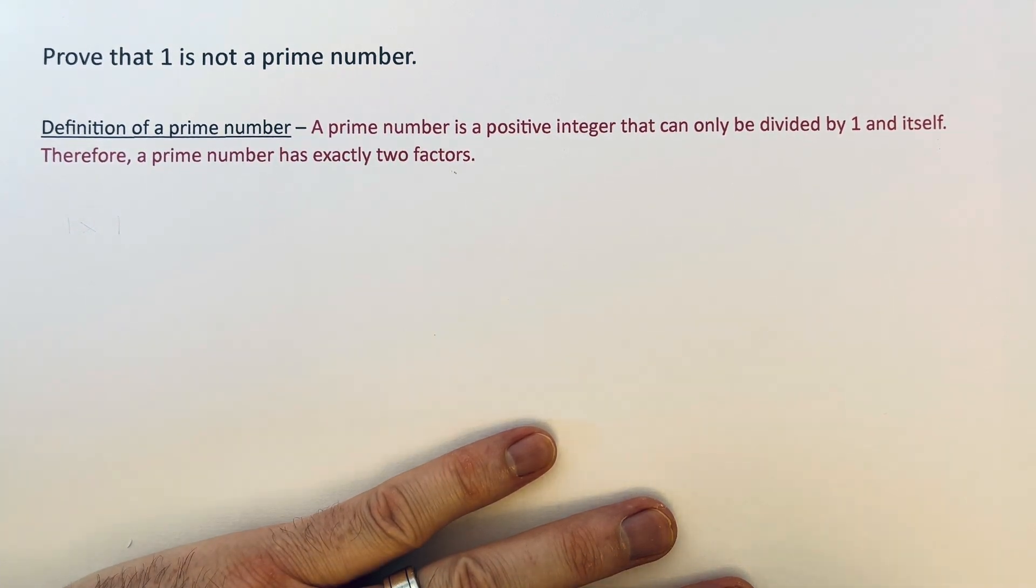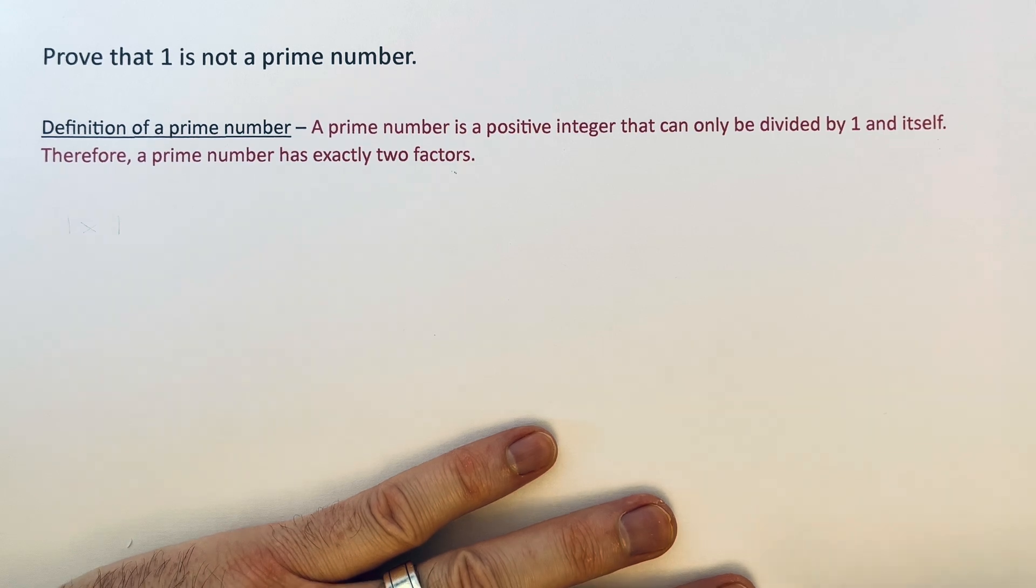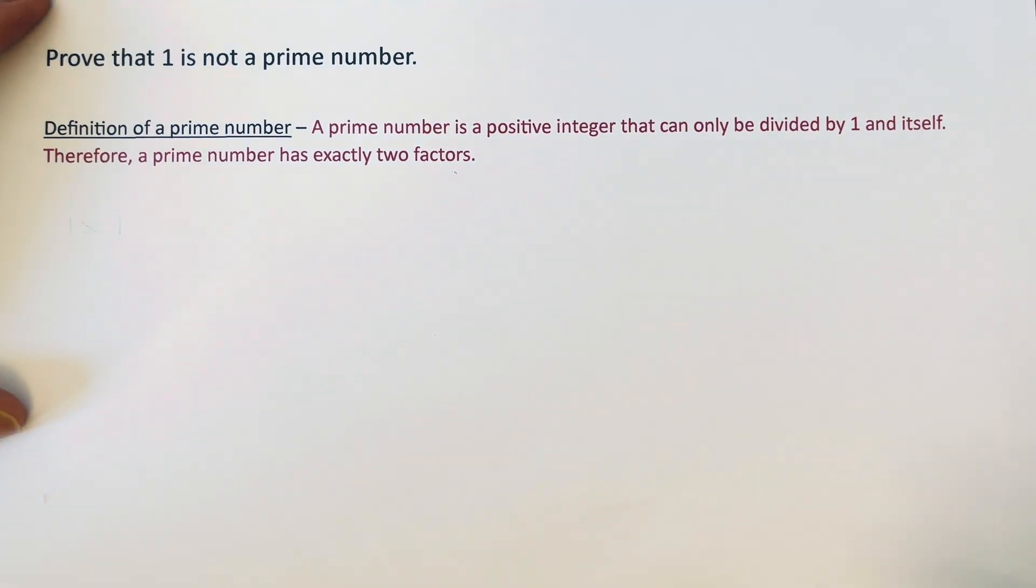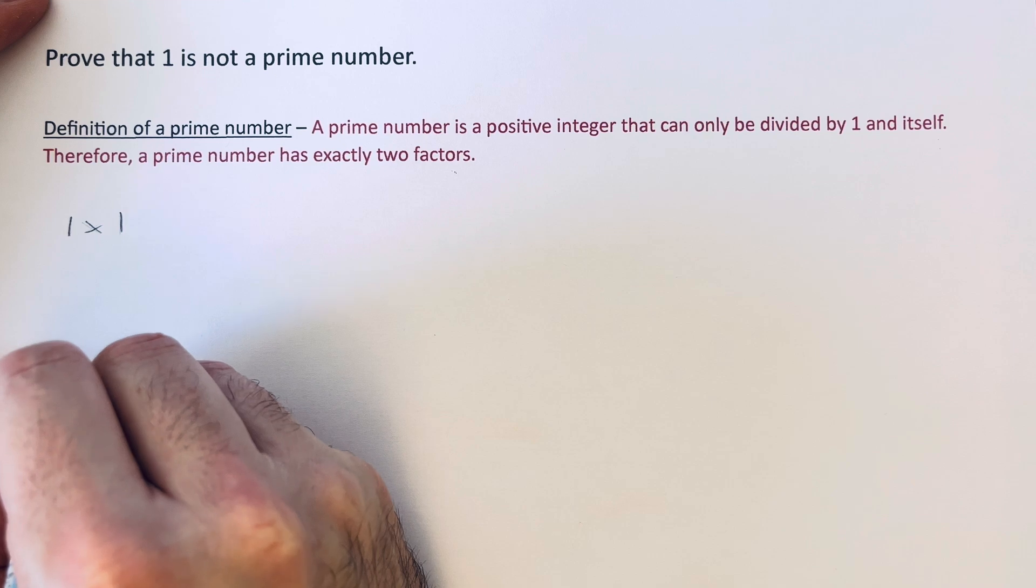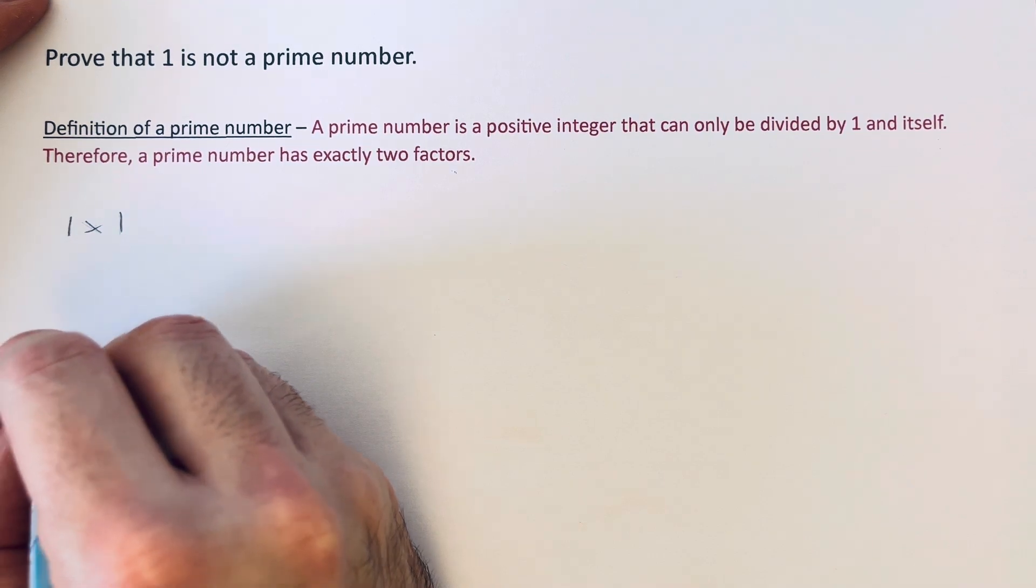First of all, let's begin by finding all the factors of 1. The best way to do this is to do factor pairs. So 1 goes into 1 one time. We've got 1 times 1 and that's about it. There's no more factors.